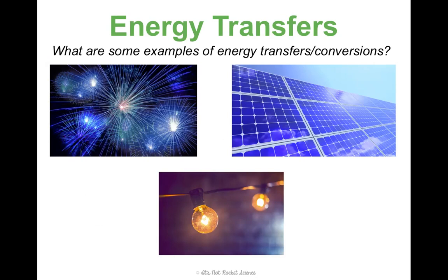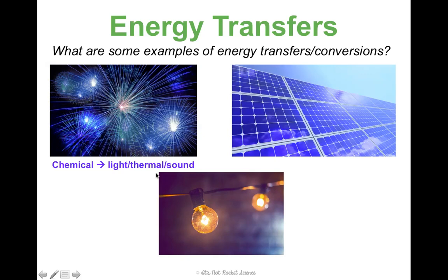A skill I want you to be able to have is to do energy transfers or energy conversions in order to show that the law of conservation of energy holds true — being able to say what source of energy is in this picture, and then what is that energy being transferred into. For example, this is a picture of fireworks. We have to light them on fire, and anytime you light or burn something, that's chemical. So the source of energy for fireworks is chemical energy being released when you light it on fire. And then what's made? Light, sound, and heat are all made at once. So this transfer would be chemical to light, thermal, and sound.